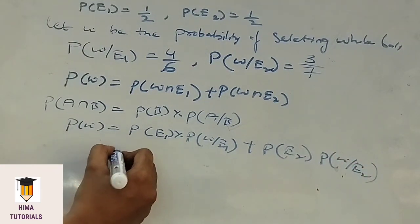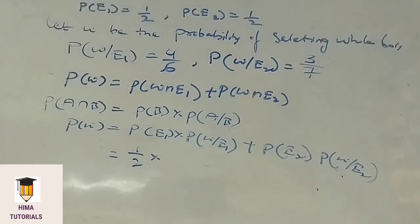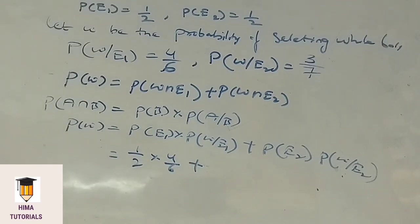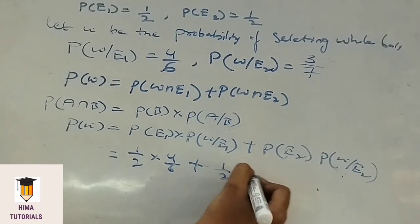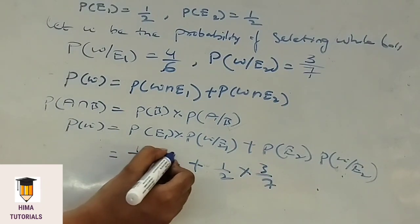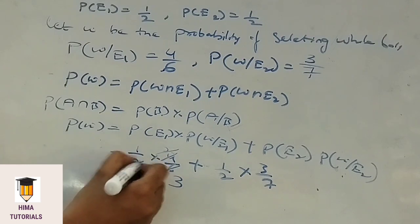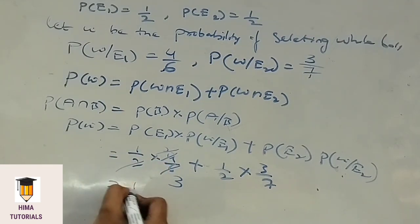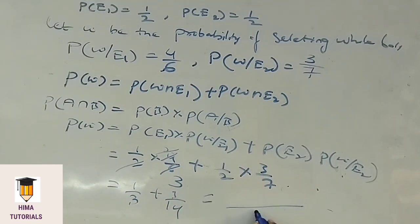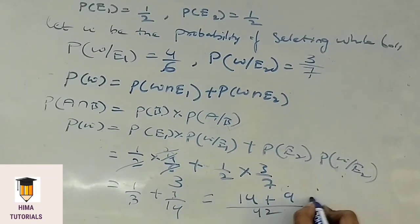Substituting: P of E1 is 1 by 2, P of W given E1 is 4 by 6, plus P of E2 is 1 by 2, and P of W given E2 is 3 by 7. This gives 1 by 2 into 4 by 6 plus 1 by 2 into 3 by 7, which equals 4 by 12 plus 3 by 14. Taking LCM of 42, we get 14 plus 9, which is 23 by 42.